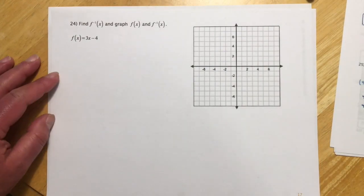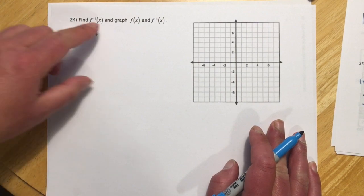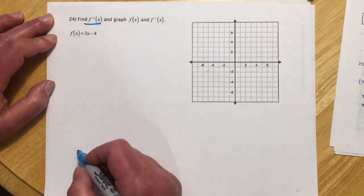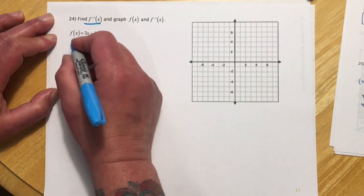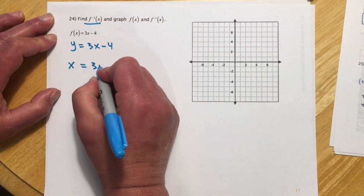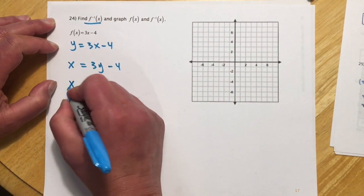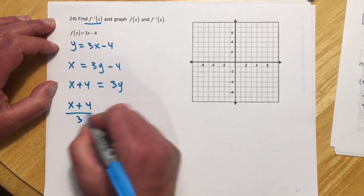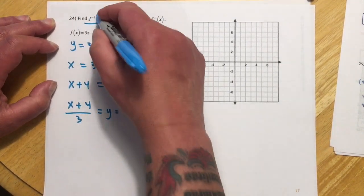These next two are section 8.2, inverse functions. Where people go wrong on the test is not reading the directions — I'm asking for three things: find the inverse, graph the original, and graph the inverse. For finding the inverse of y equals 3x minus 4, the first step is to swap x and y: x equals 3y minus 4. Then get y by itself — add 4 over, divide by 3 — giving y equals (x plus 4) over 3, which is f inverse of x.